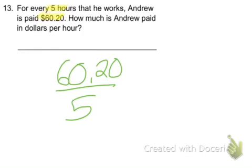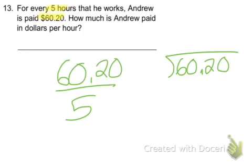So that's simply done: $60.20 divided by five, and you just do the division.